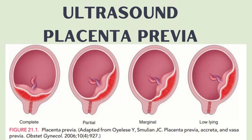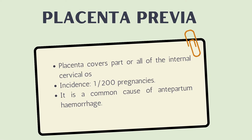In this video I'll talk about ultrasound placenta previa. Placenta previa refers to placenta covering part or all of the internal cervical os. It has an incidence of 1 in 200 pregnancies and is a common cause of antepartum hemorrhage.